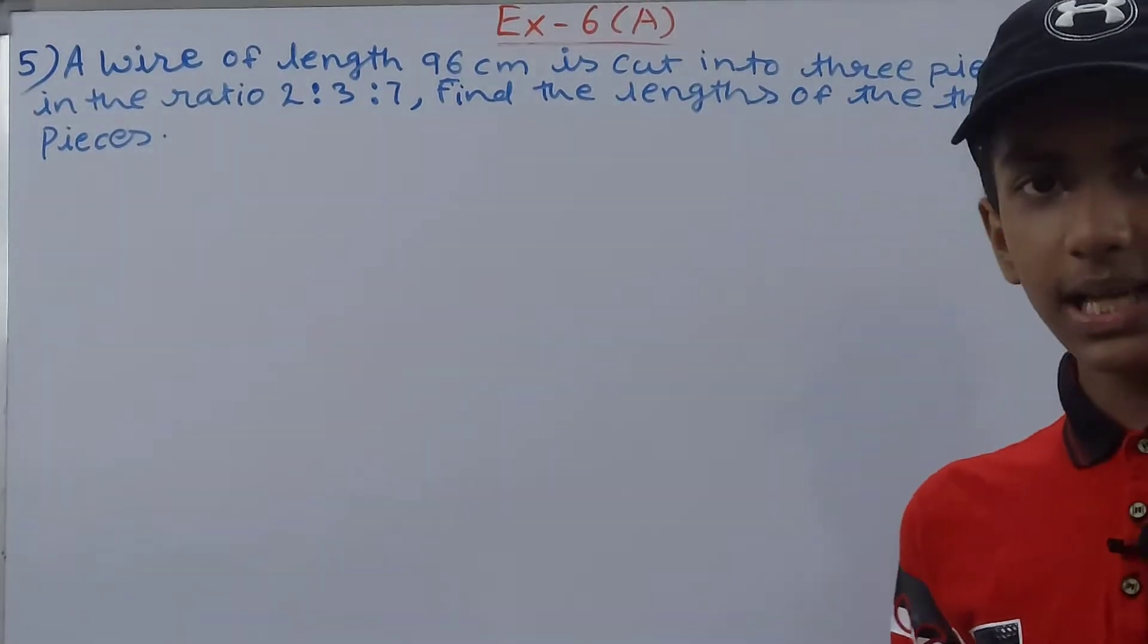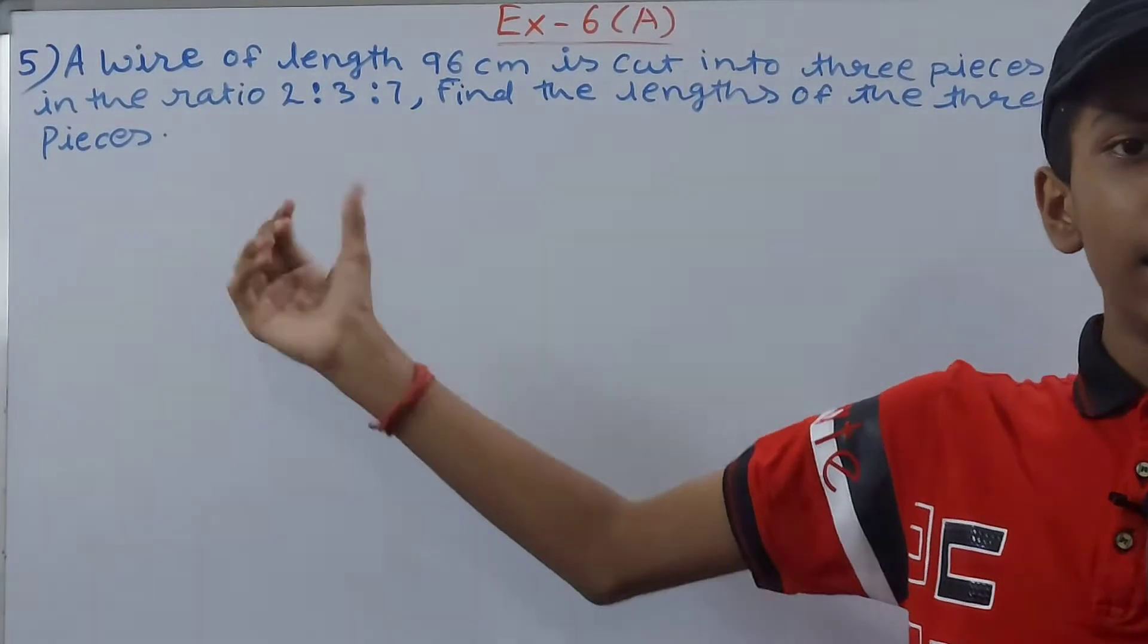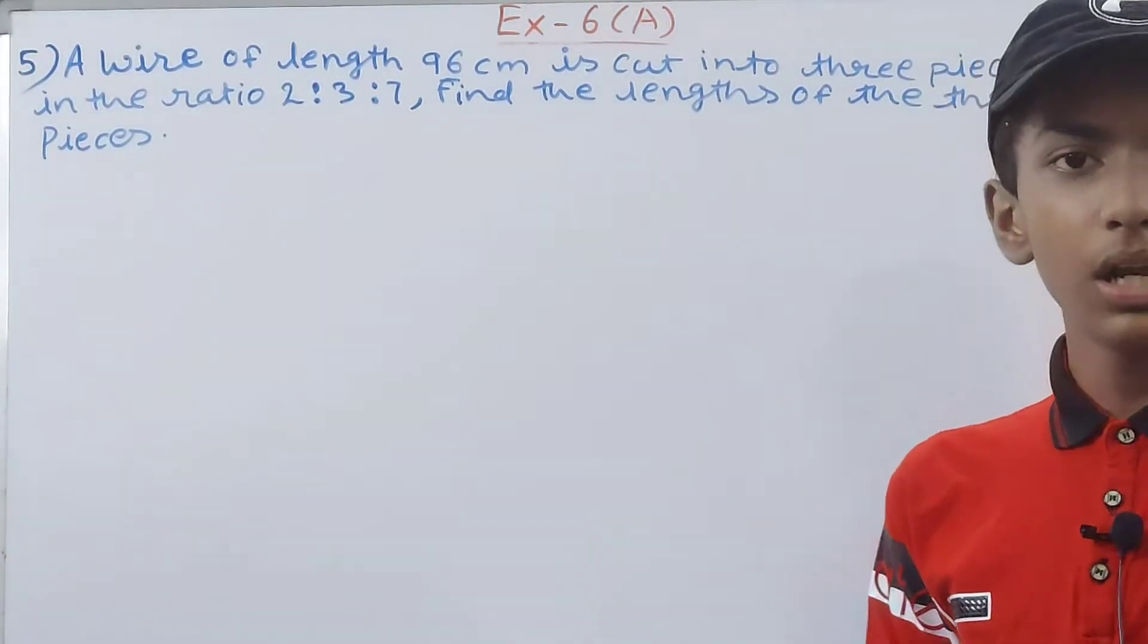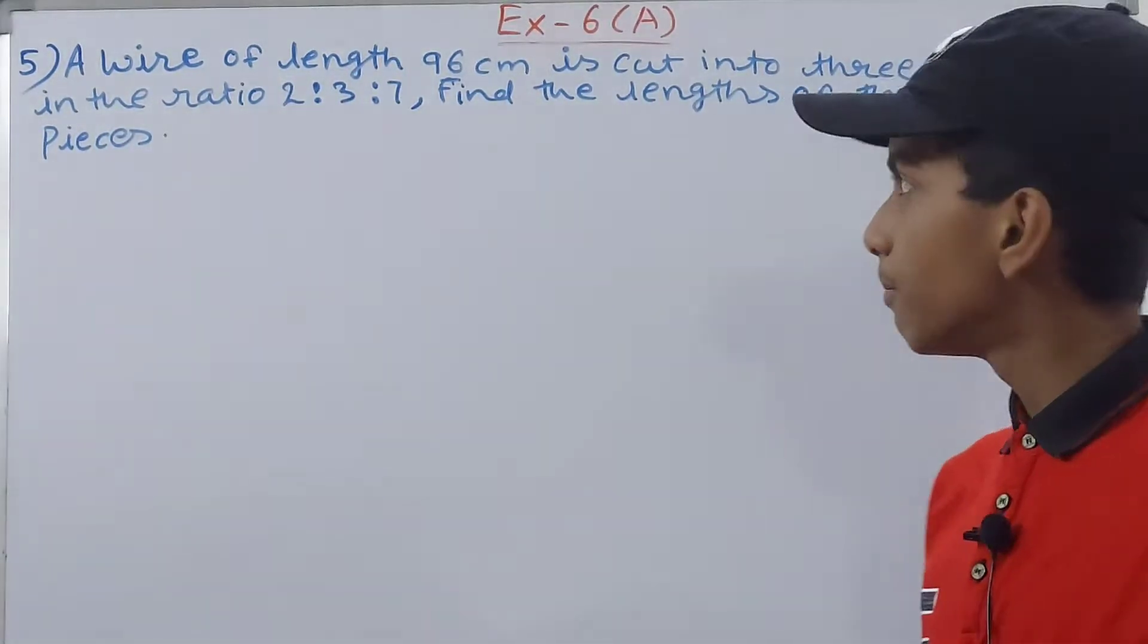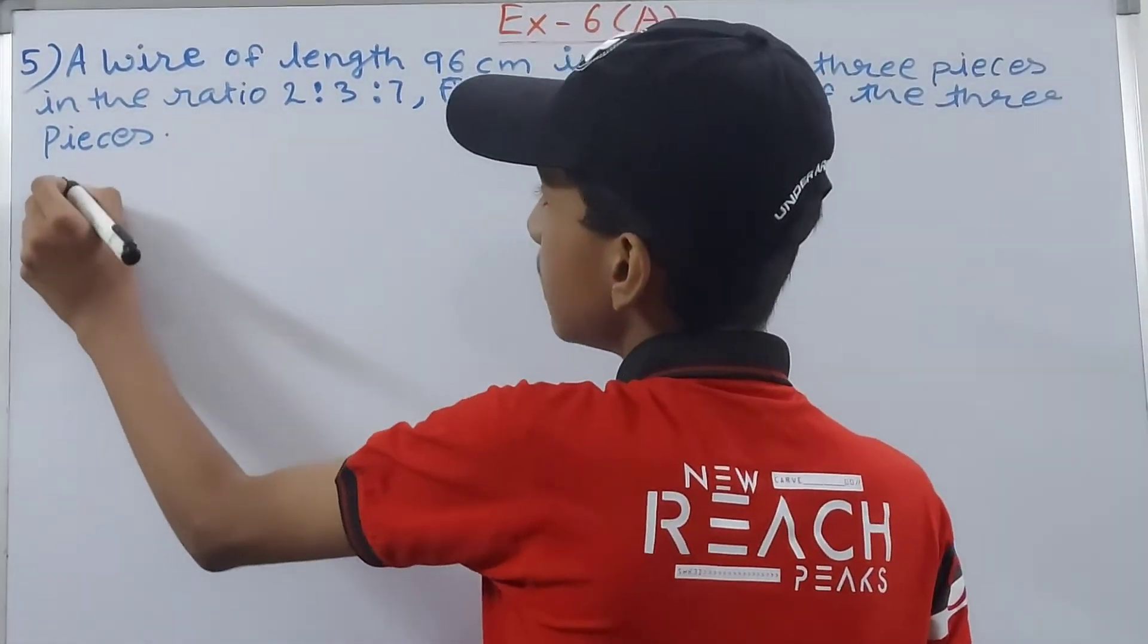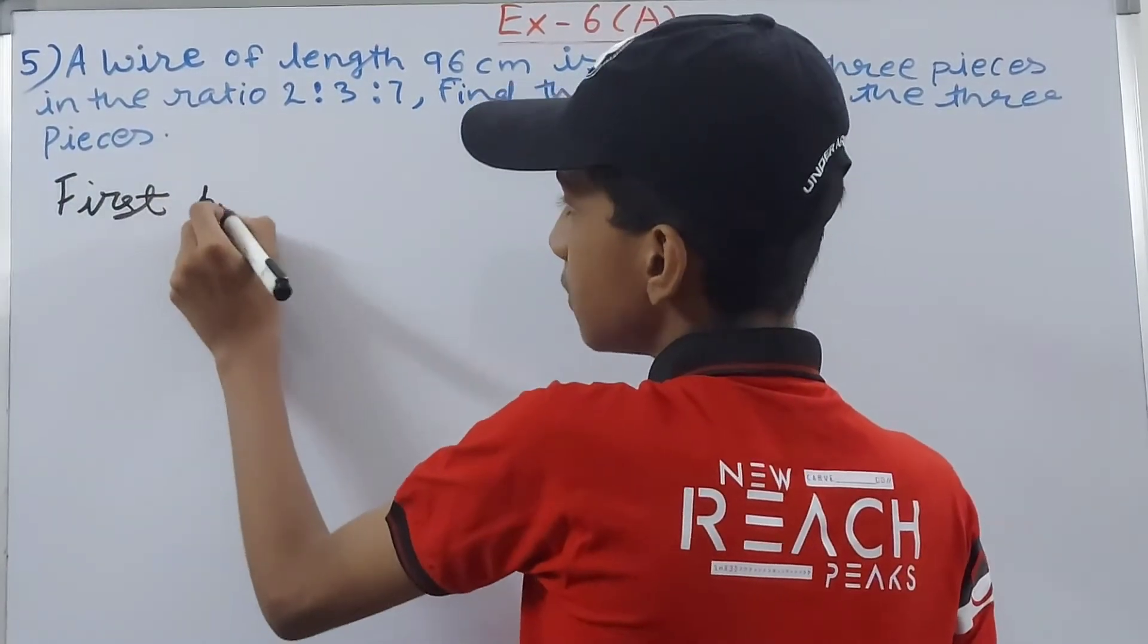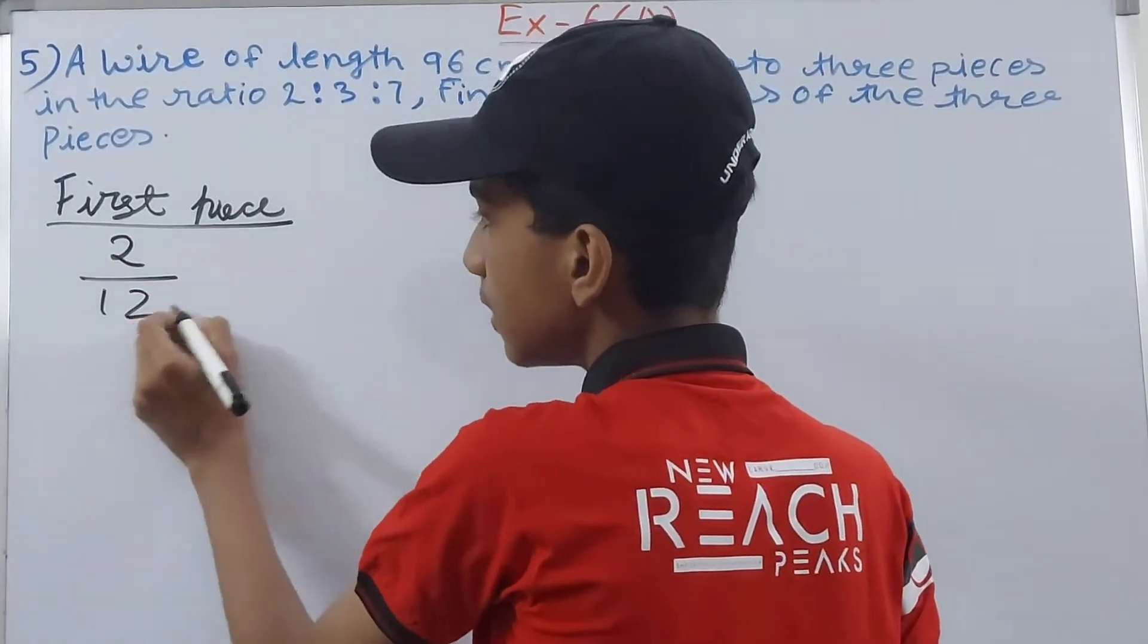Next, you see that 2 will do 2 out of 12. So basically, the term whose value we have to find will be written out of the total number of terms. So 2 upon 12, and we will multiply that by the total length, that is 96. So first piece, first piece has 2 upon 12 into 96.